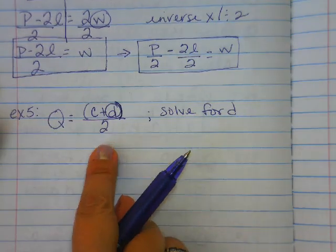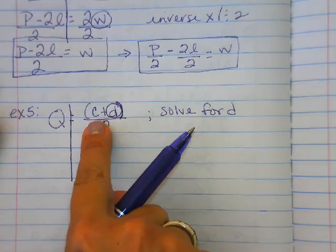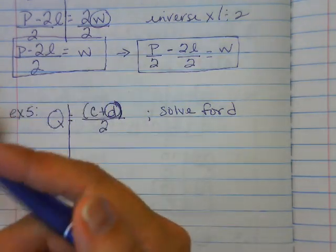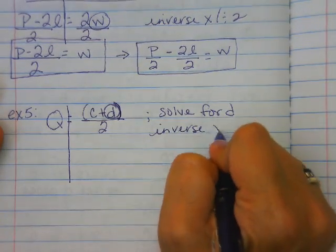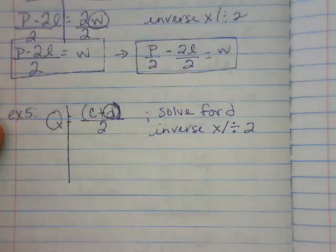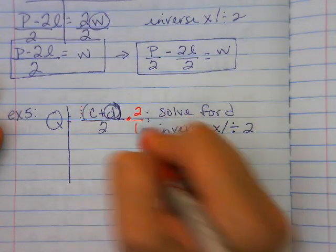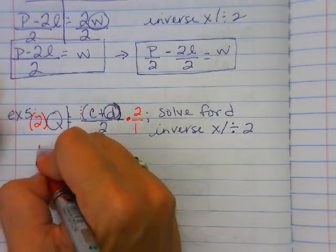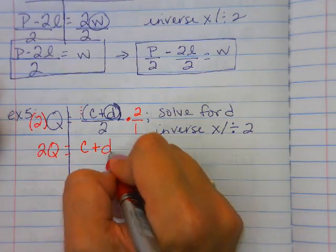There is no distributing, no like terms, no variables on one side. And normally we would undo the add subtract, but because this is an entire quantity, we need to get rid of the 2 first. So to get rid of it, divide by 2, we're going to have to multiply by 2. So we're actually going to do the inverse multiply divide first. So I'm going to multiply this by, there's technically a 1 here, so we're going to multiply by the reciprocal, and then I'm going to multiply by 2 over here. So I'm going to have 2 times Q is equal to, now I can get rid of my parentheses because all I have left is c and d.